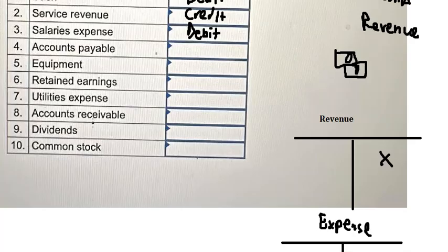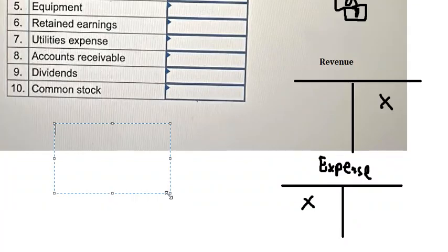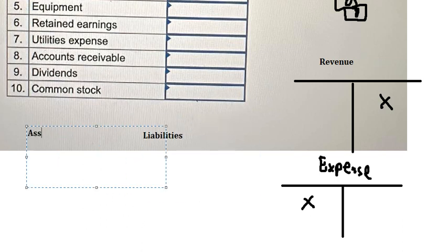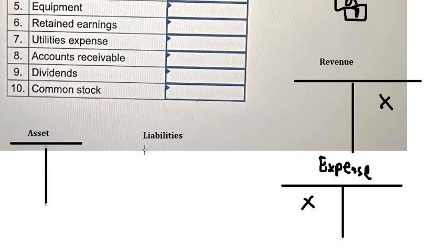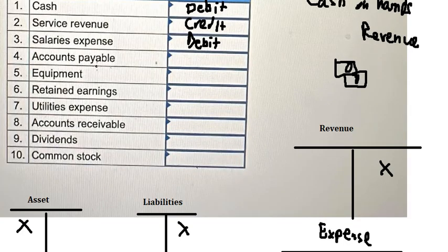About accounts payable — this is a liability. Assets go on the debit side, and liabilities go on the credit side. So accounts payable, being a liability, should be on credit.